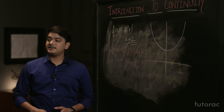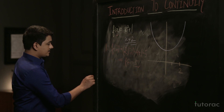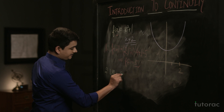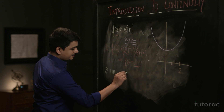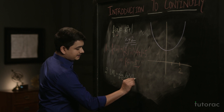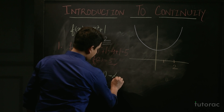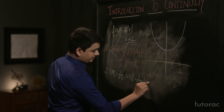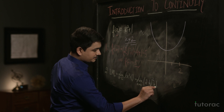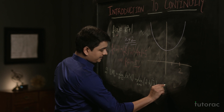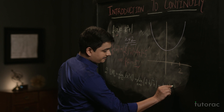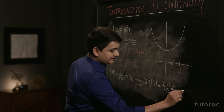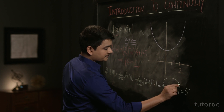The second condition is that the limit of the function should exist at that point. Finding the Left Hand Limit (LHL): limit as x tends to 2⁻ of x² + 1 equals limit as h tends to 0 of (2 − h)² + 1, which gives 4 + h² − 4h + 1. Putting h = 0, we get 5.